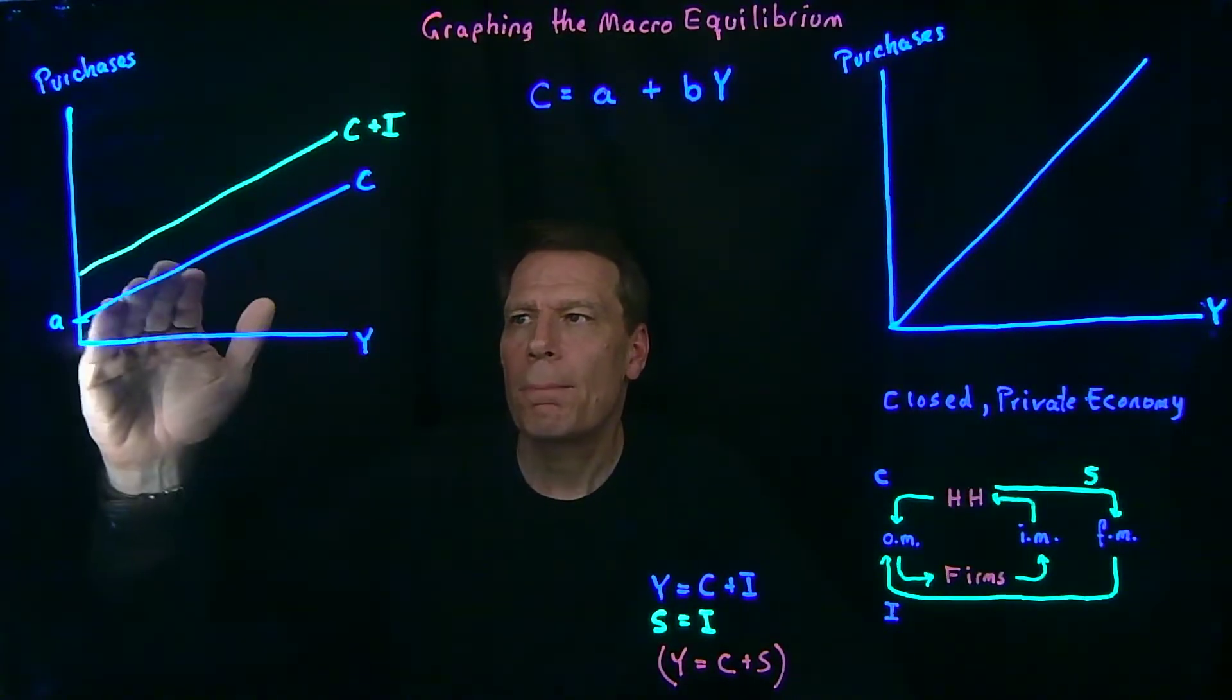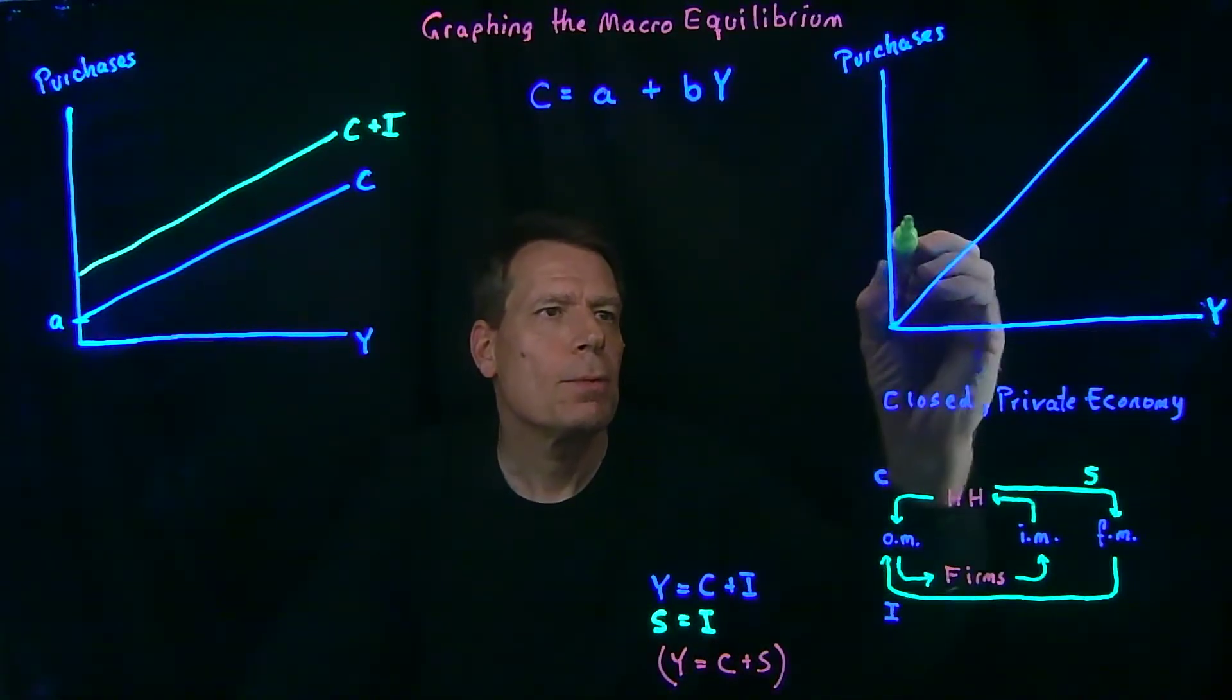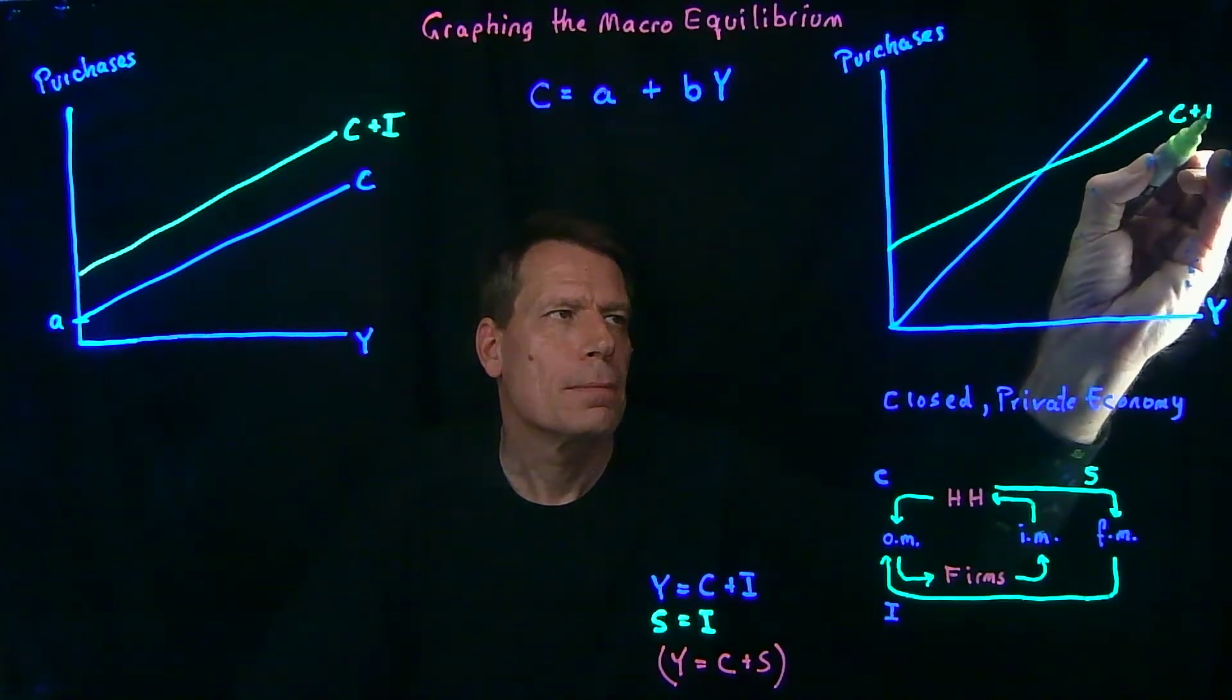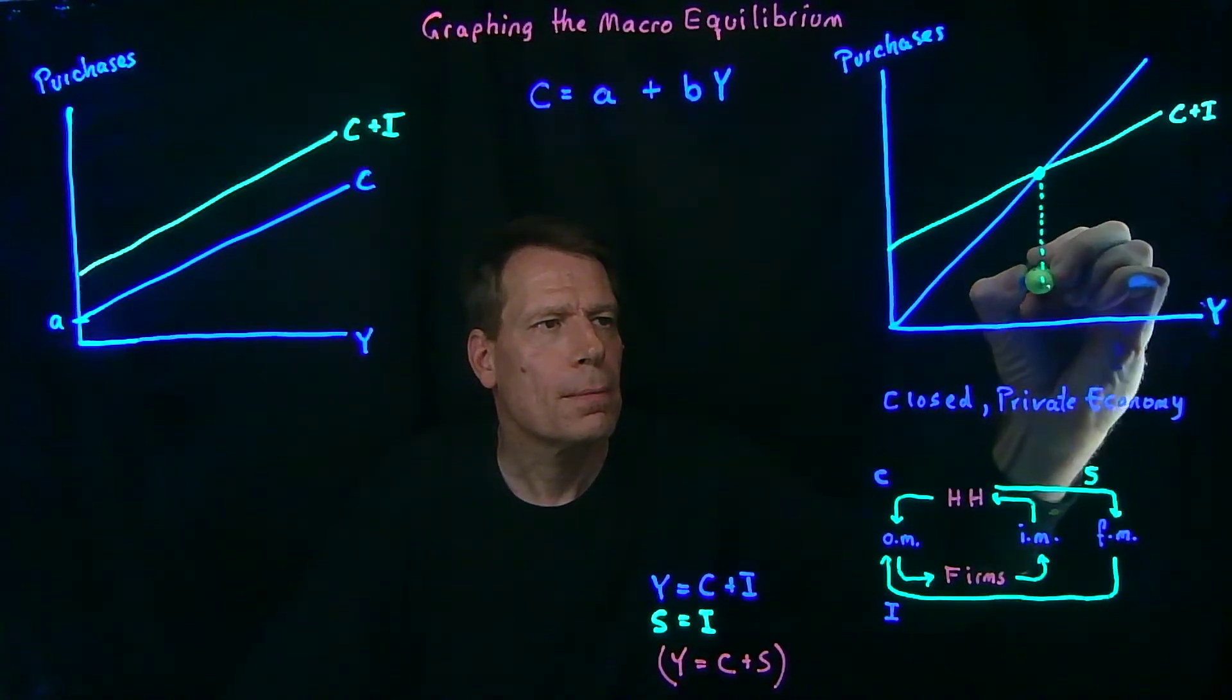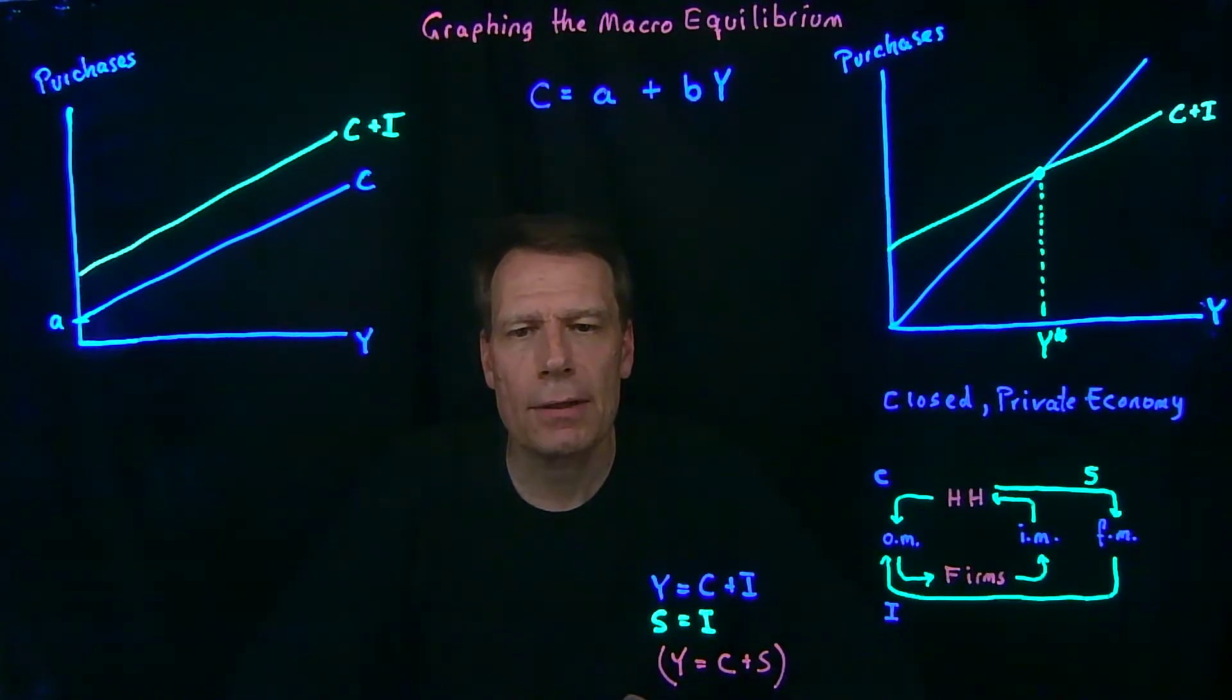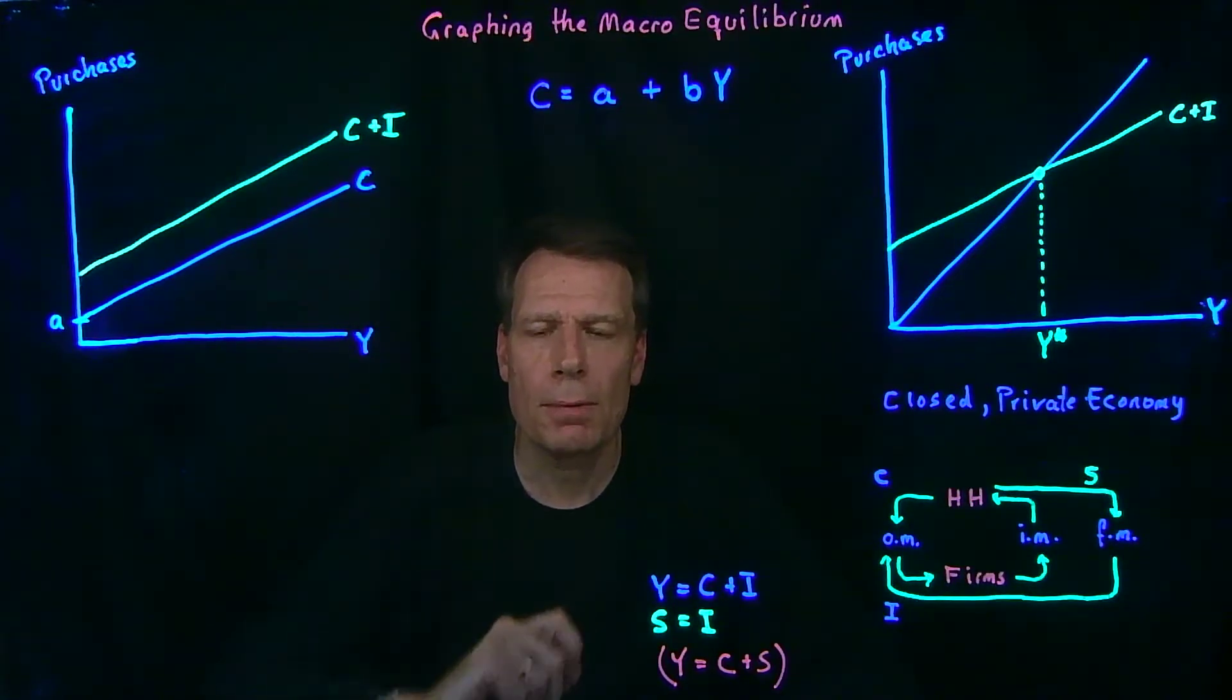So now we can take our purchases line and add it to this graph. And when we do that, we get a picture that looks something like this. Now we already know that the equilibrium has to lie on that 45 degree line. That's where that equation is satisfied. So the equilibrium then is going to lie at that intersection. And that gives us equilibrium GDP. That's what we calculated when we combined that behavioral equation with the equilibrium equation.